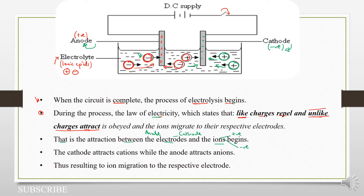So the cathode will attract cations, which are positive. The cathode is negatively charged. And the anode attracts anions — the positive electrode will attract the negatively charged ions. And thus we shall say ion migration to the respective electrode is occurring. So that is the concept of the ionic theory.